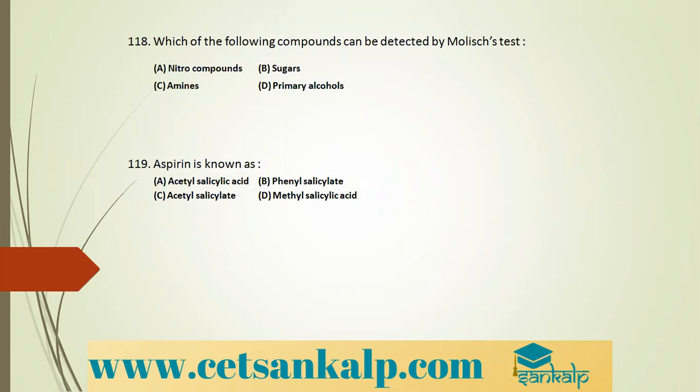Q: Which compound can be detected by Molisch test? Molisch test is the general test for carbohydrates — 1–2 drops of alcoholic alpha-naphthol solution added to glucose solution, then H2SO4 added carefully along the sides of the test tube. A violet ring at the junction of two liquids confirms the presence of carbohydrates.